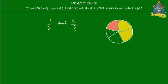On the other hand, if you have unlike fractions, which means the denominators are different — unlike fractions such as one-third and one-fourth — the denominators in both these fractions are different: three and four.